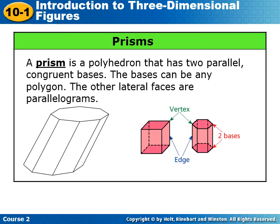So speaking of prisms, here's the definition. A prism is a polyhedron that has two parallel congruent bases. The bases can be any polygon. The other lateral faces are parallelograms.